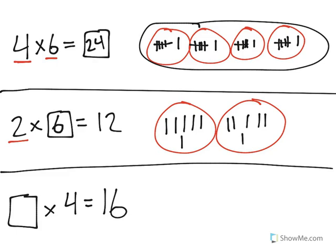On the last one, we don't know how many groups we have — we're missing the first factor. But we do know there are 4 in each group, and that we end up with a total of 16.